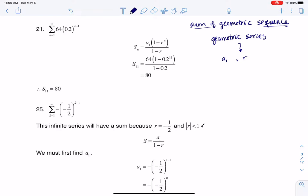So if I wanted to find a sub 1, I would look at my sequence over here, and I would let a equal 1. So in this case, I would do 64 times 0.2 to the 1 minus 1, and that would be 64 times 0.2 to the 0, which would just be 64, because anything raised to the 0th power is just 1.